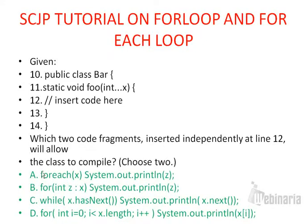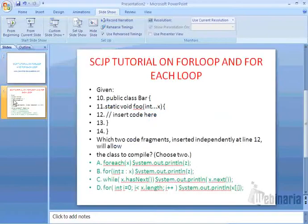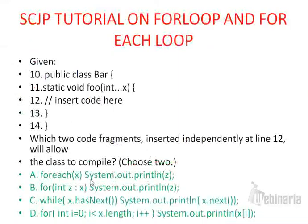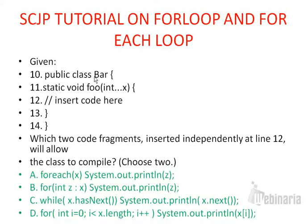First option is a for-each loop with System.out.println z. This option is invalid. The argument name is x, and since it accepts variable number of arguments we can iterate through x — x acts like an integer array. But in this for-each loop we are printing z, and we don't have the variable z declared anywhere. So we will get a compilation error.